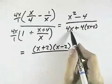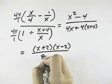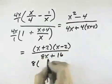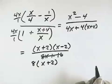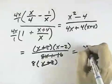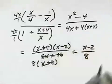The denominator is going to be 4x plus 4x is going to be 8x plus 4 times 4 is 16. If we take an 8 out of that, we can see that's going to be 8 times x plus 2. Well, that allows us to cancel the x plus 2s, leaving x minus 2 in the numerator and 8 in the denominator.